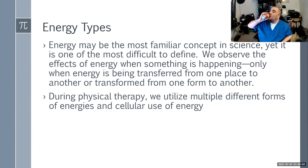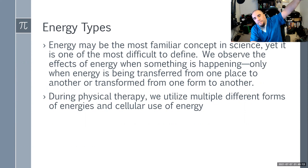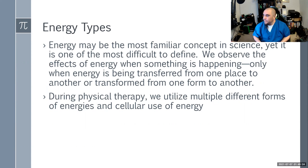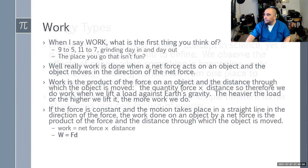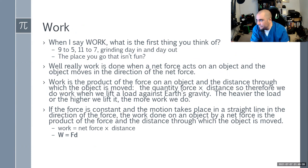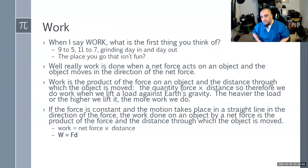Energy may be the most familiar concept in science but is the most difficult to define. We observe the effects of energy only when it's transferred from one thing to another — like electricity converted to light illuminating a room. During physical therapy, we use multiple different forms of energy, including cellular use of energy for exercise. In physics, work is done when a net force acts upon an object and moves it in the direction of that force. Work is the product of force and distance.